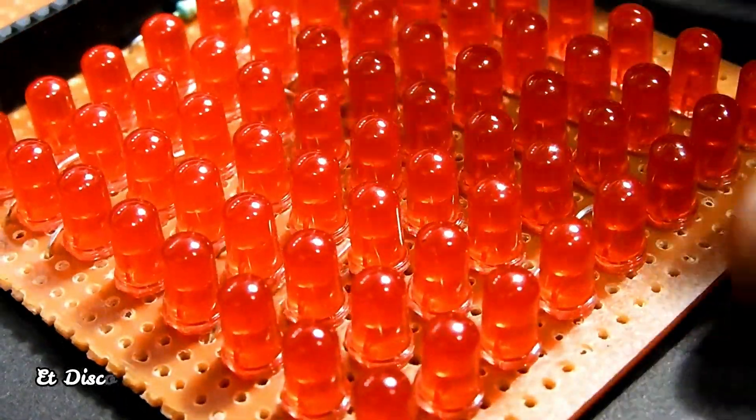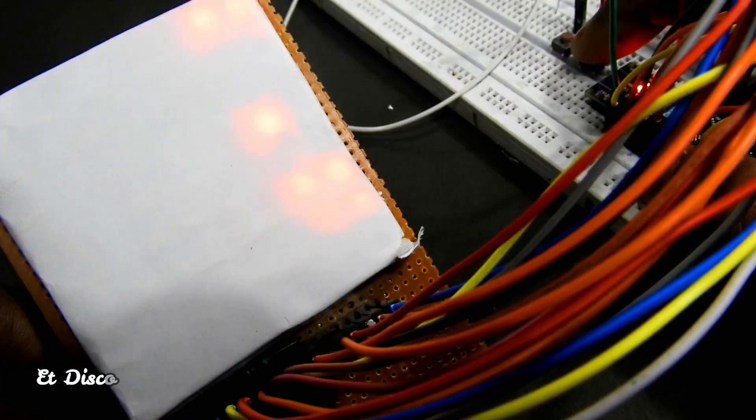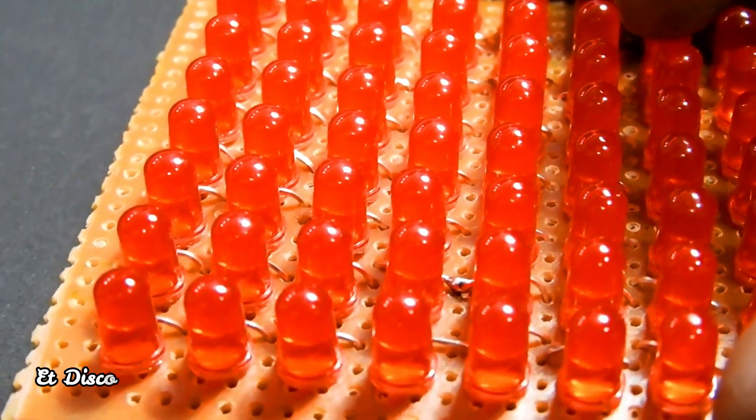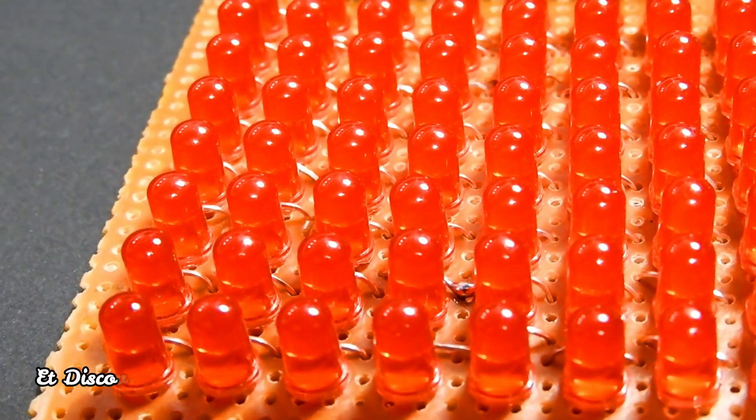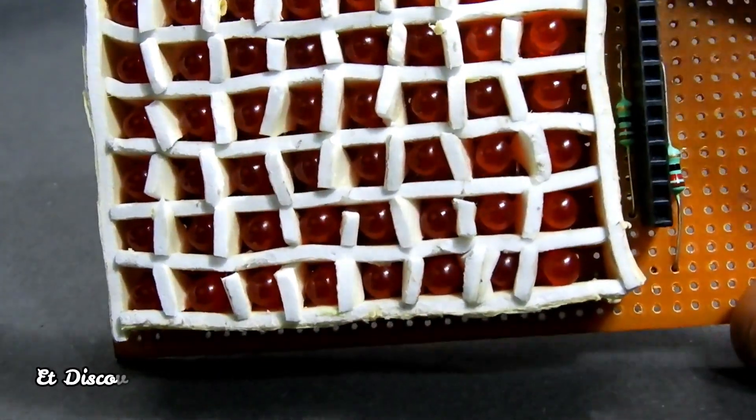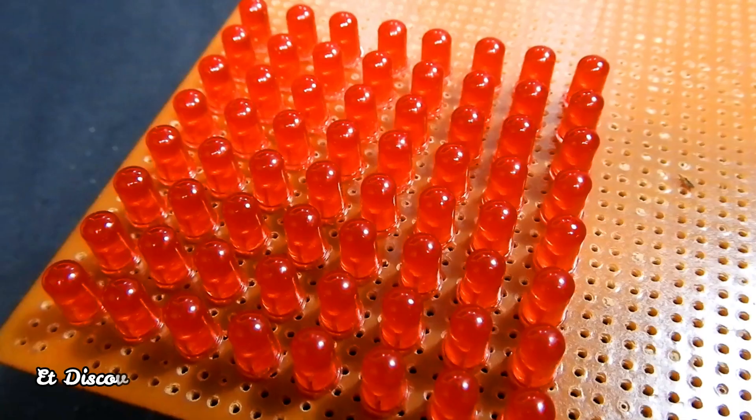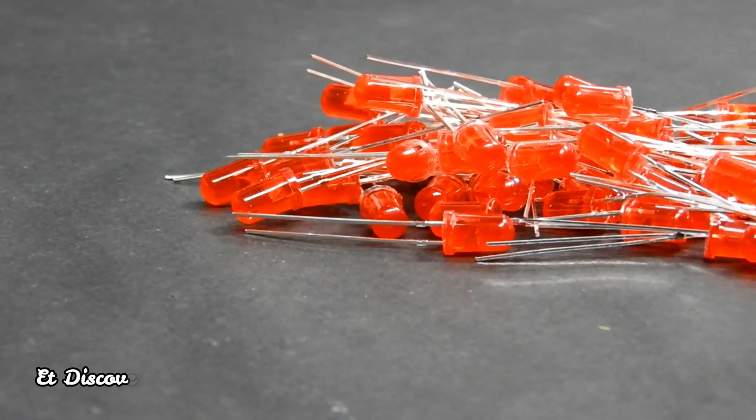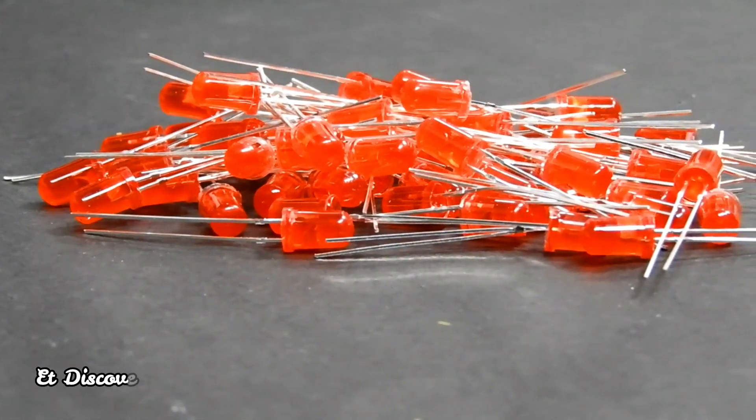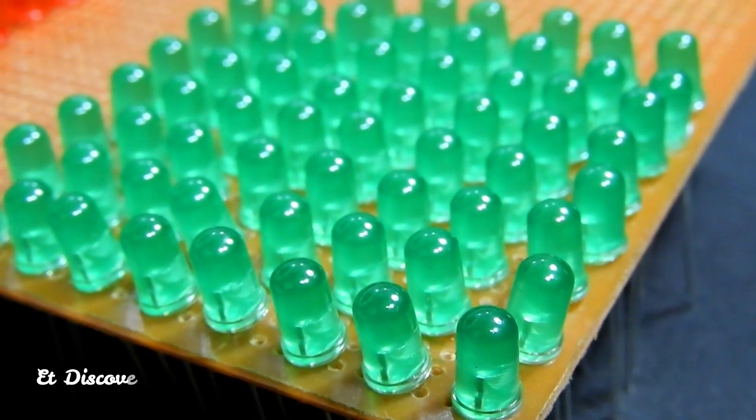First of all I need a display for watching those games. So I have chosen this 8x8 matrix display. You can make it yourself or buy it online. I want to make it myself. I chose the red colored LEDs for the 8x8 matrix display. You can choose another colored LEDs.